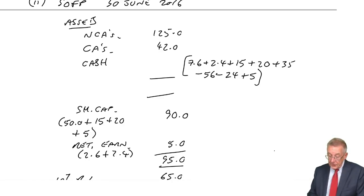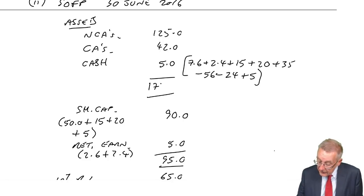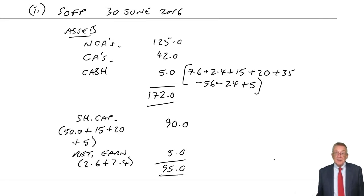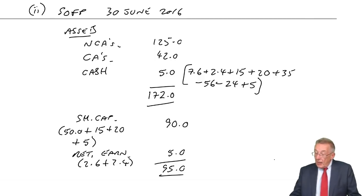And so what cash balance do we end up with? 7.6 plus 2.4, 15, 20, 35, minus 56, minus 24, plus 5. I get cash of 5. What does it add up to? 1, 7, 2. Yes, it balances.